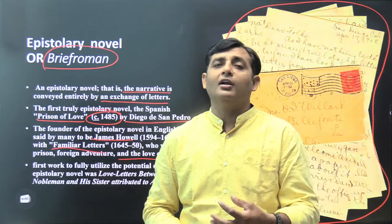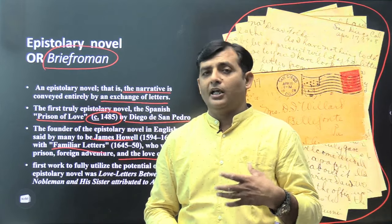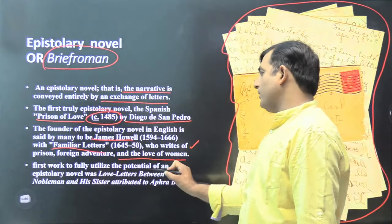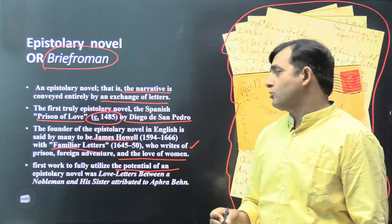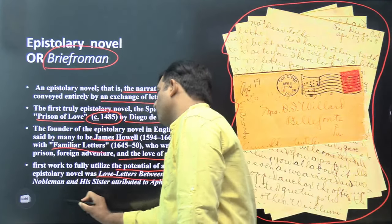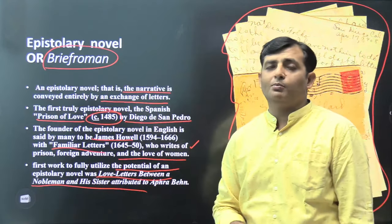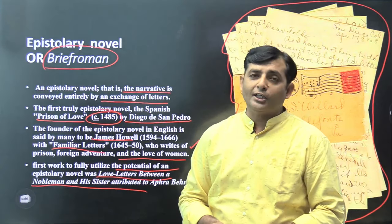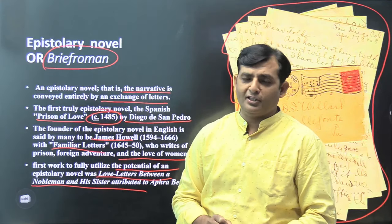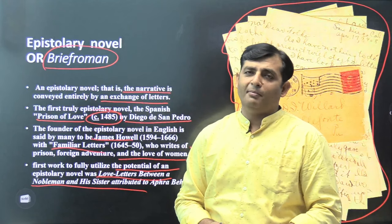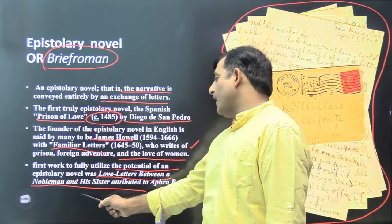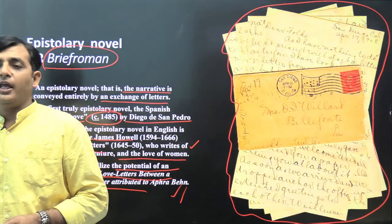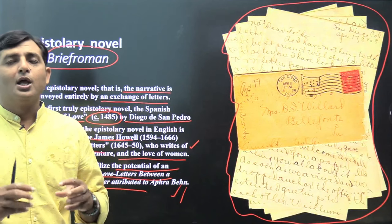The word 'novel' was not even in existence at the time, but epistolary writing was there — letters were exchanged and stories were conveyed through them. The first work to fully utilize the potential of the epistolary novel was 'Love Letters Between a Nobleman and His Sister,' generally attributed to Aphra Behn, who was the first professional woman writer. This was the first work that fully utilized the epistolary novel technique, also known as brief romance.